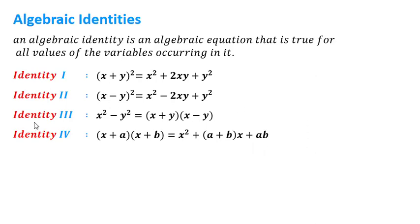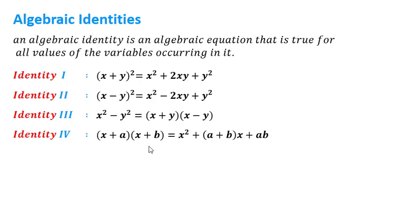In the fourth identity, the first term in both expressions is the same — x. Only the second term is different: a and b. We take the square of the first term x, then add (a + b) multiplied by x, and finally add the product of the last two terms a and b, giving (x + a)(x + b).